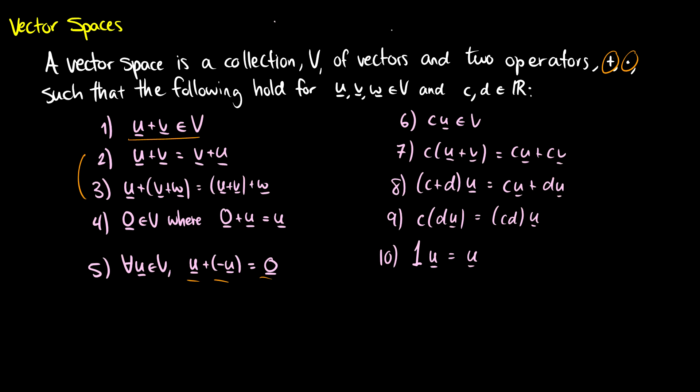Those are the addition rules. Multiplication, if we have a vector u, then for any real number we should be able to multiply that vector by a real number and also be in our vector space.